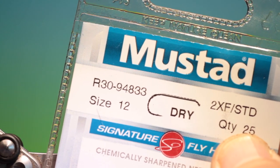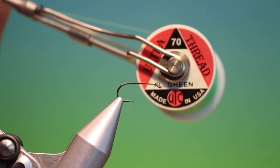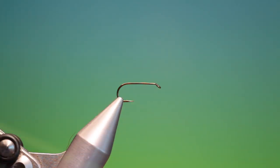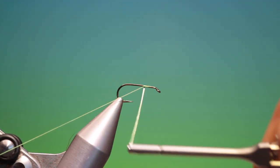We'll start with the Mustard R30 size 12 dry fly hook. We've got some ultra thread fluorescent green, just put this on here and this is the hot butt caddis.